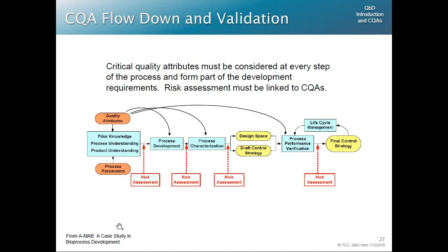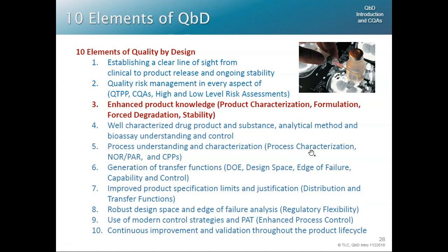Here is an example from GlaxoSmithKline using the A-MAb report — not one I did, but showing that others are thinking the same way. They want a high-level risk assessment, and when they get into low-level characterization they do another risk assessment. Then they look at design space in conjunction with control strategy, proceed to validation, and mitigate risk throughout the lifecycle to make sure control plans do what they're supposed to do.